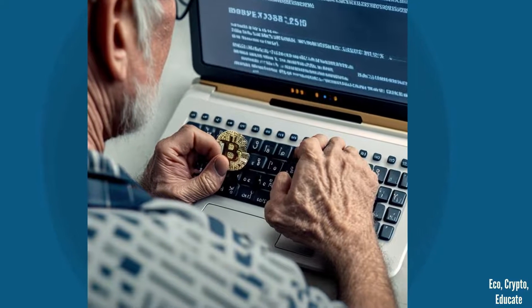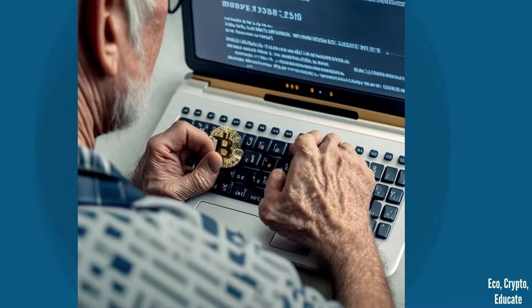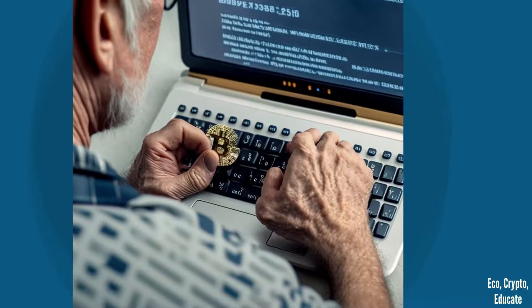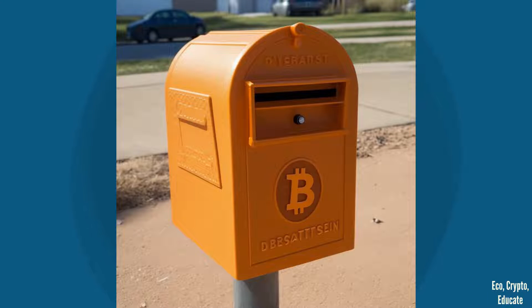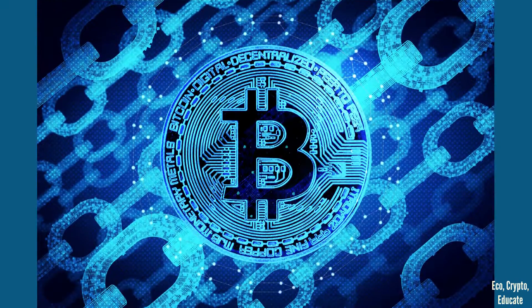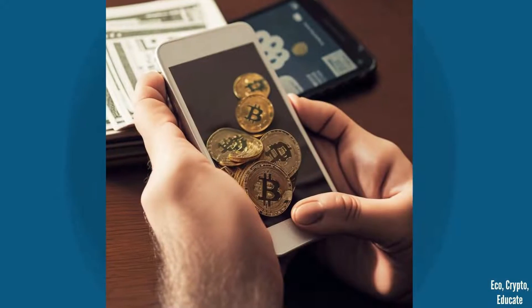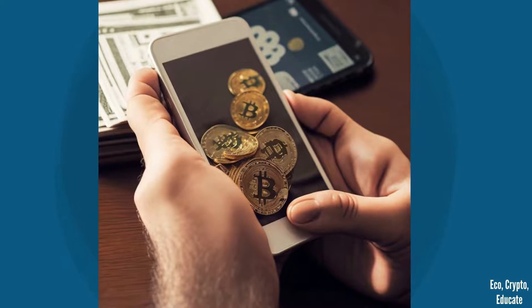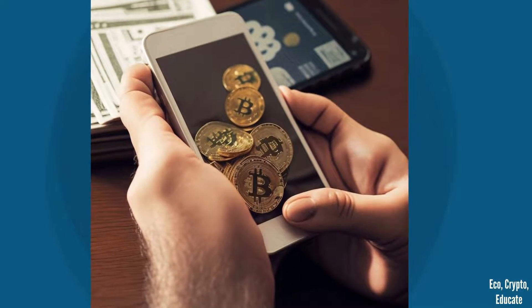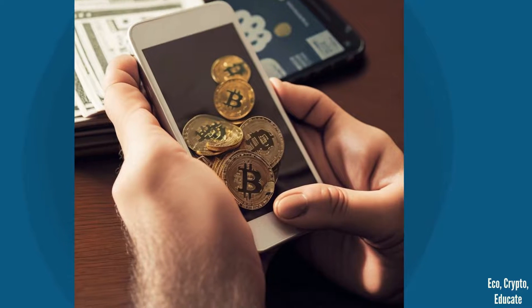To send Bitcoins to someone else, you simply need to enter their Bitcoin address and the amount you want to send. The Bitcoin network then verifies the transaction and records it on the blockchain. And that's it — the recipient will then see the amount of Bitcoins they received in their wallet, which is tied to their unique address.